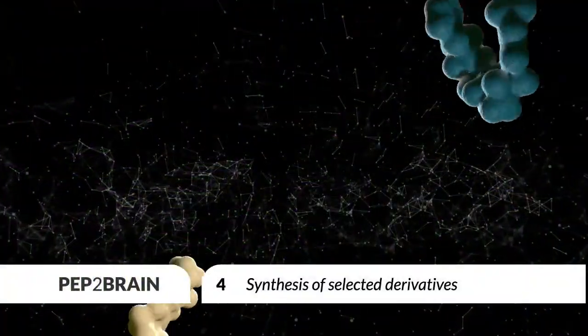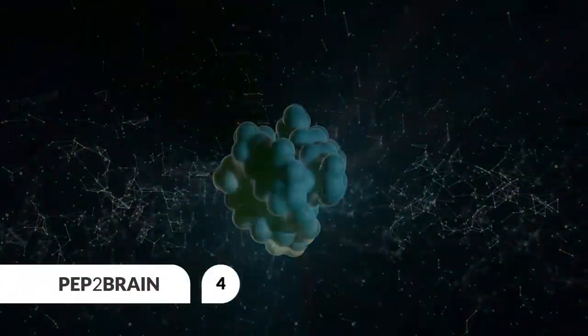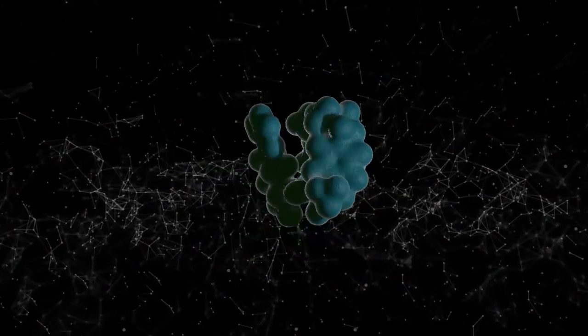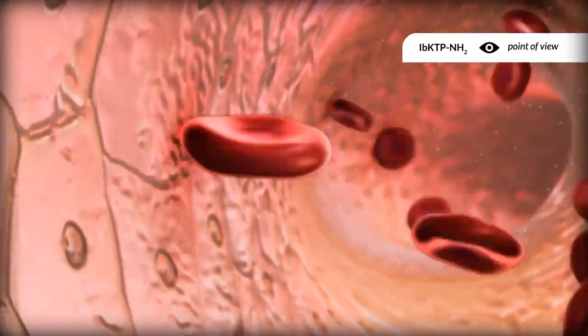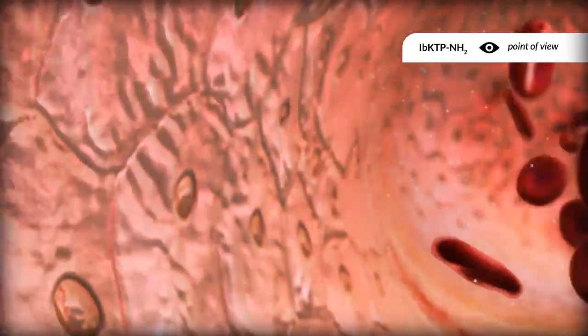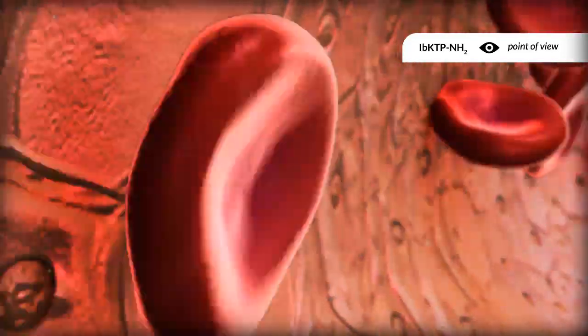In the final step, amidated kyotorphin was bound to ibuprofen, an anti-inflammatory painkiller. Researchers hoped the amidated kyotorphin and ibuprofen would help each other in crossing the blood-brain barrier, where both painkillers could act.